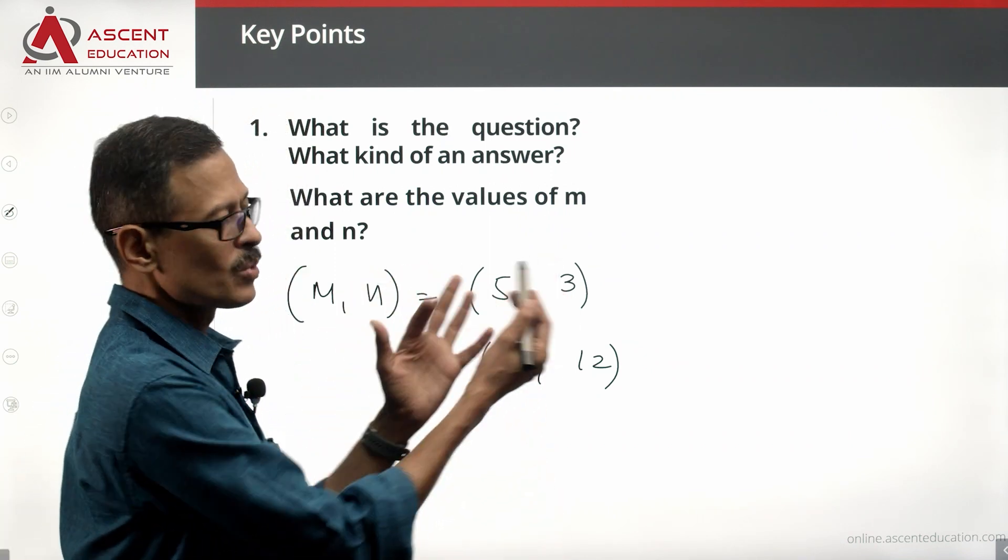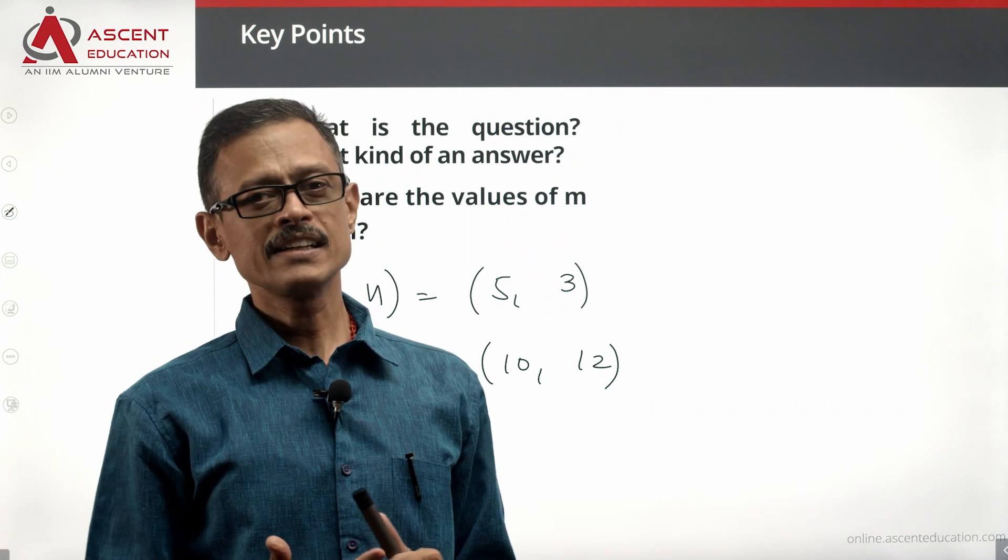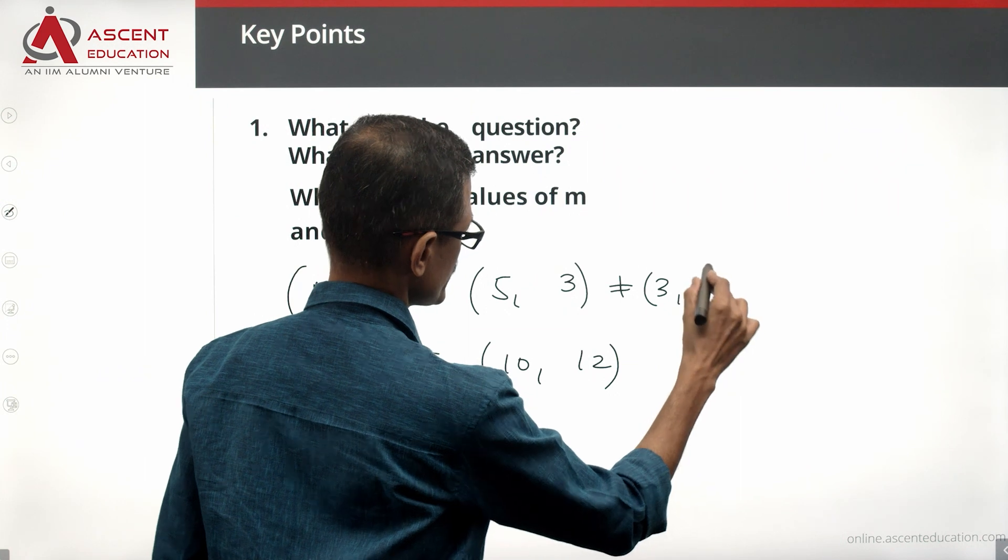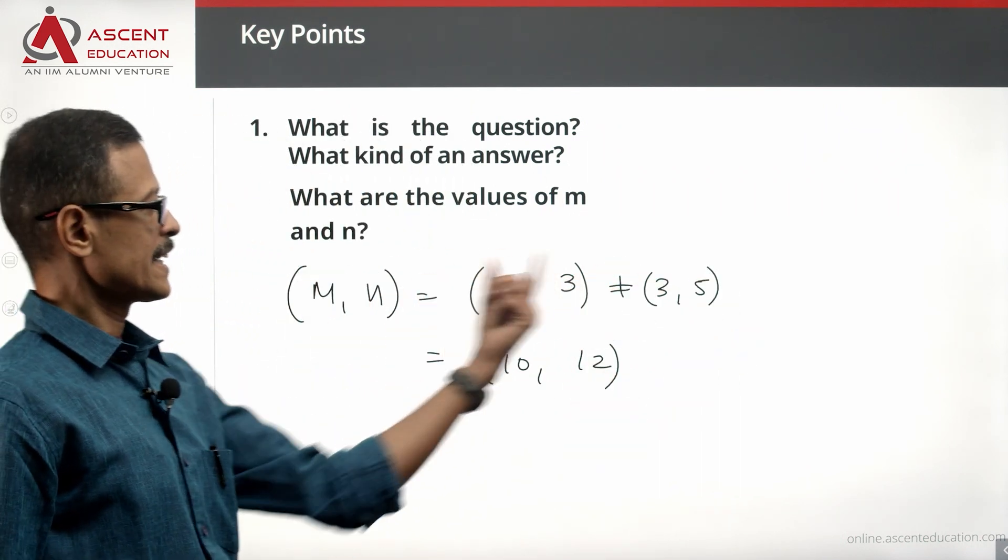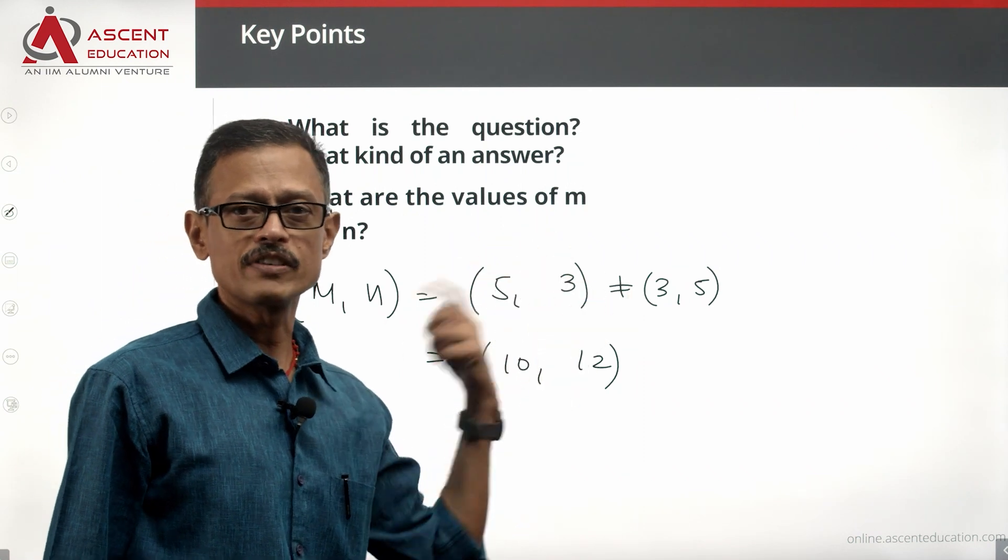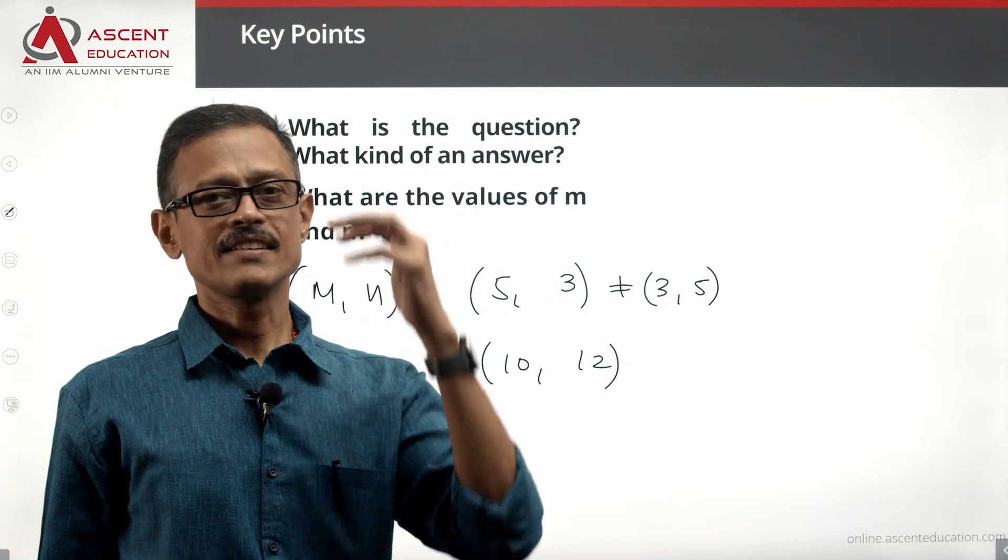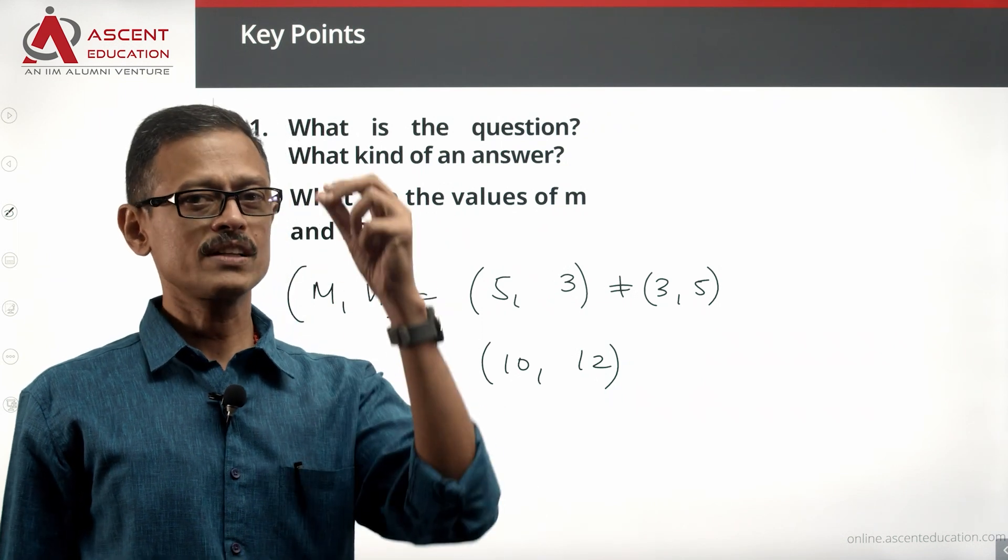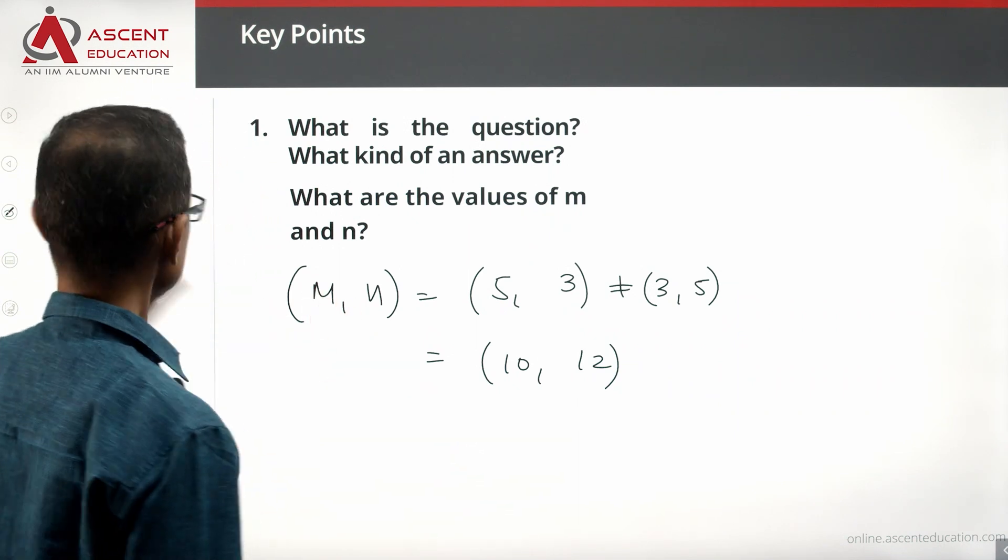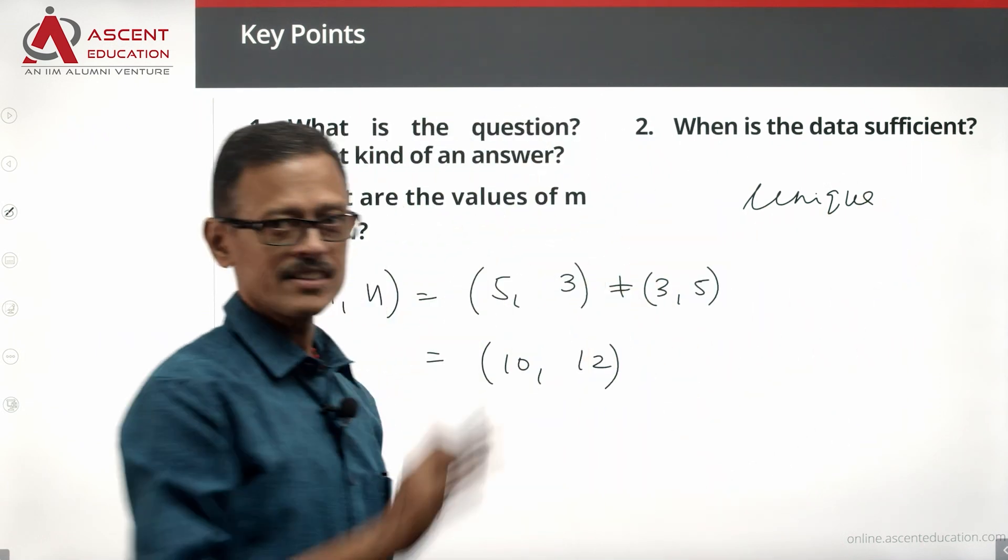It cannot be like M equals 5, N equals 3 is the same as M equals 3, N equals 5. These two are two different options. It is not just sufficient to say one of the numbers is 3, the other number is 5. We need to be able to say which one is 3, which one is 5. What is the exact value of M? What is the exact value of N? Then the data is sufficient.